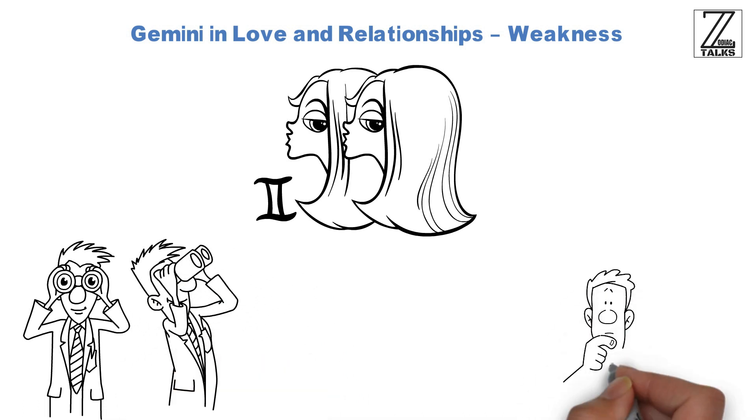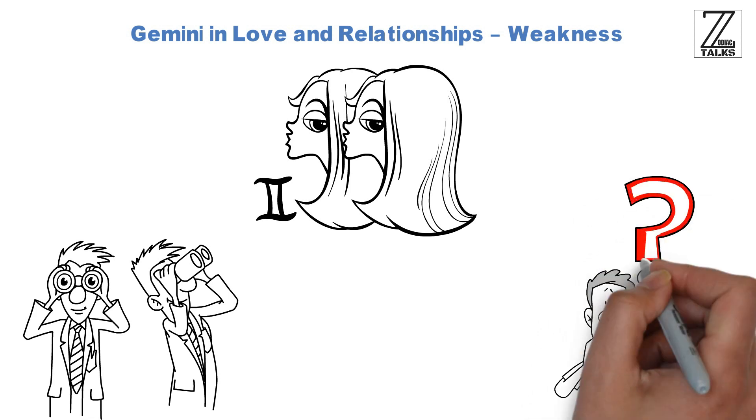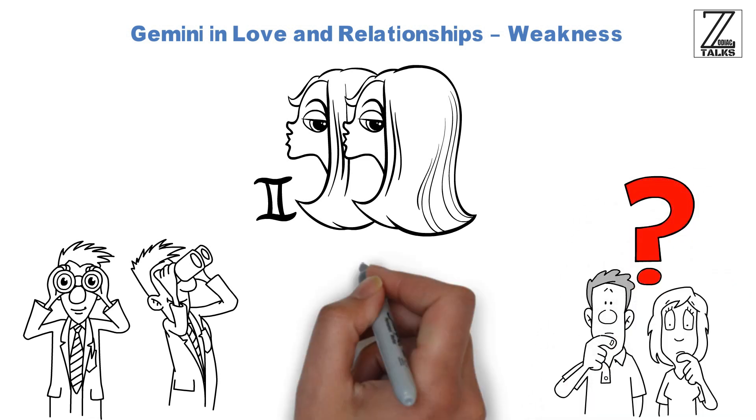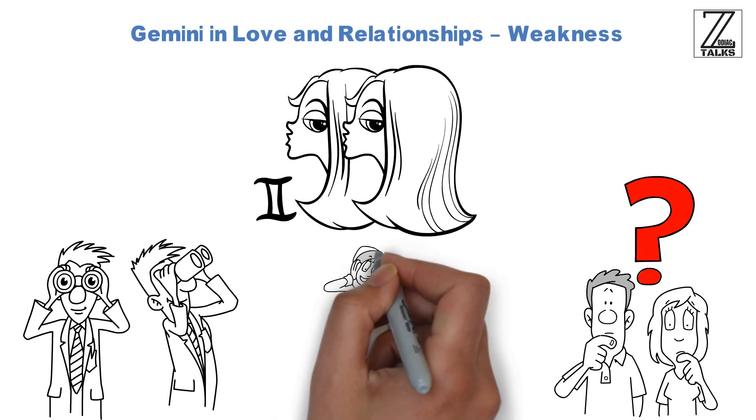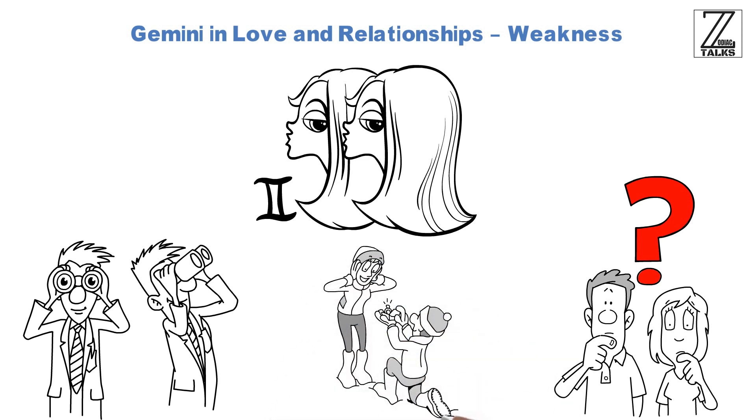Because of this, Geminis can be a difficult sign to be in a relationship with. They can be easy to love, charming and funny, and often have some of the best stories, but some of the things that make them so magnetic are also the things that make them difficult to be with.